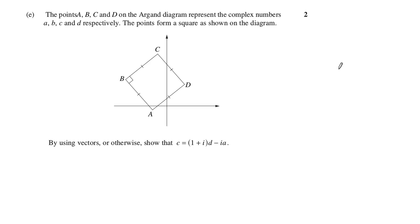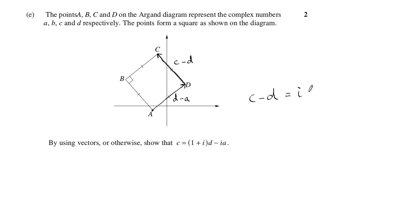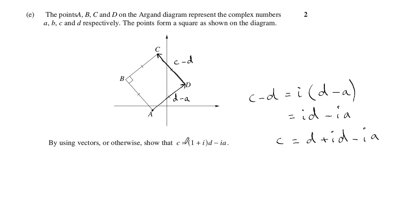Part E. The approach is to take the vector (d − a) and note that rotating it 90 degrees gives the vector (c − d). We choose these two sides because there's no b involved, so we avoid any vector involving b. Multiplying by i rotates by 90 degrees, so we can write: c − d = i(d − a). Expanding and moving d to the right by adding it gives d + id − ia, and factorizing that gives the required result.